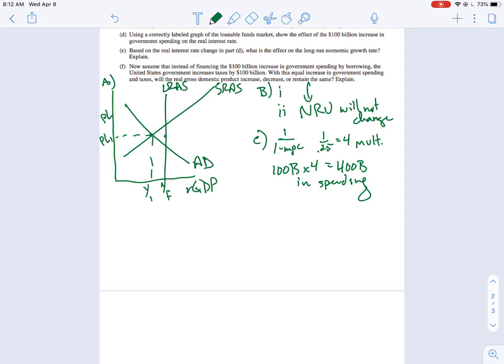Now, the loanable funds market show the effect of $100 billion increase. So we talked about this in class, and it can go one of two ways. So the loanable funds market is always going to look like this. With Q loanable funds here and real IR here, you've got downsloping demand for loanable funds and upsloping supply of loanable funds. I typically look at the government as a demander of loanable funds. So when the government comes in, you're going to have an increase in quantity and raising of the real interest rate.